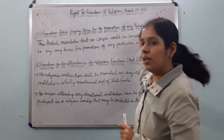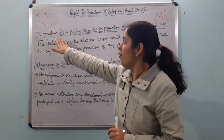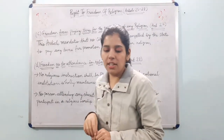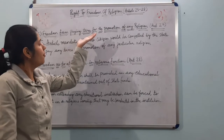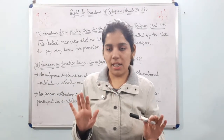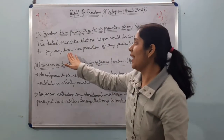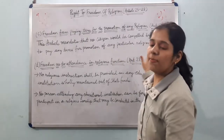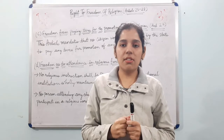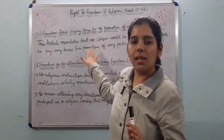Article 27 says freedom from paying taxes for the promotion of any religion. This article mandates that no citizen shall be compelled by the state to pay any taxes for the promotion of any particular religion. So if you are promoting or propagating any religion, you do not need to pay any tax for it, and the state will not collect money from you for that purpose.